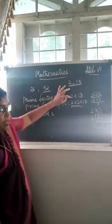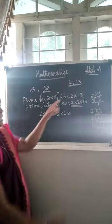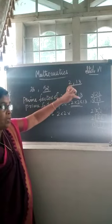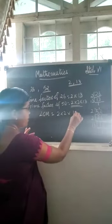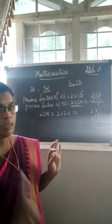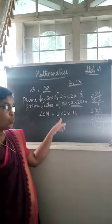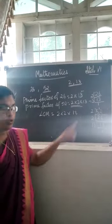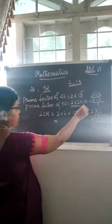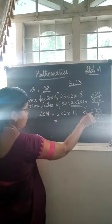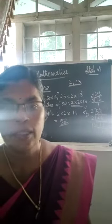Here 2 comes only 1 time, and here 2 comes 2 times — that maximum number of times we have to take: 2 into 2. Into 13 is another factor — 13 here only 1 time, and here also only 1 time. So maximum number of times means 1 time only, so we take 13 once. So the LCM is 2 into 2 into 13. What is the LCM? 2 into 2 is 4, and 4 into 13 is 52. So 52 is the LCM of 26 and 52.